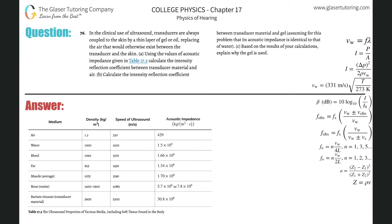Number 76, in the clinical use of ultrasound, transducers are always coupled to the, whatever, letter A. Using the values of acoustic impedance in the table, calculate the intensity reflection coefficient between transducer material and the air.